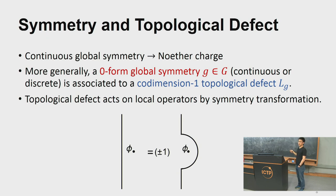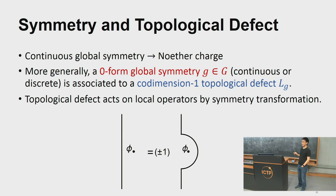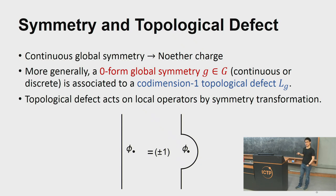For discrete symmetry there is no Noether current, but there is still a codimension-one topological defect L that implements the symmetry transformation. In two dimensions this is a line. If you bring the line to the left of a local operator phi, nothing changes. If you pass the line through phi, the correlation function changes by a sign: plus one if phi is Z2-even, minus one if phi is Z2-odd. This topological line is the object we play with throughout the talk.